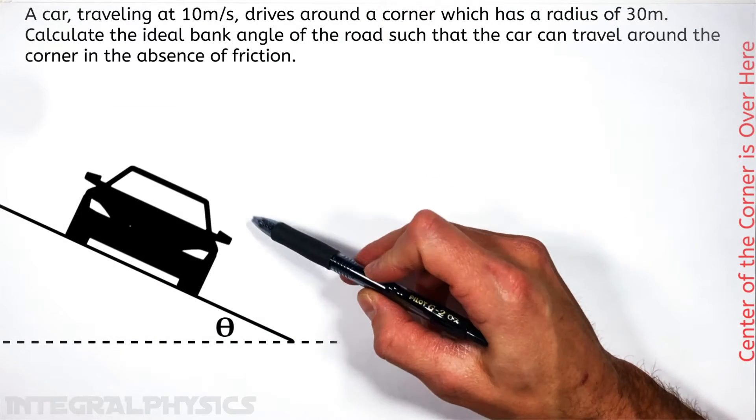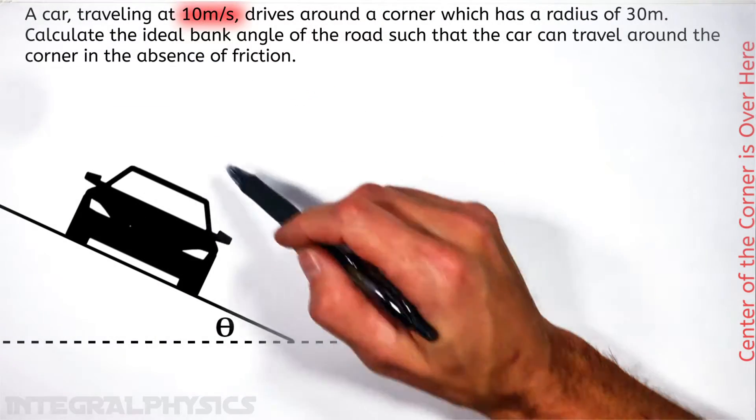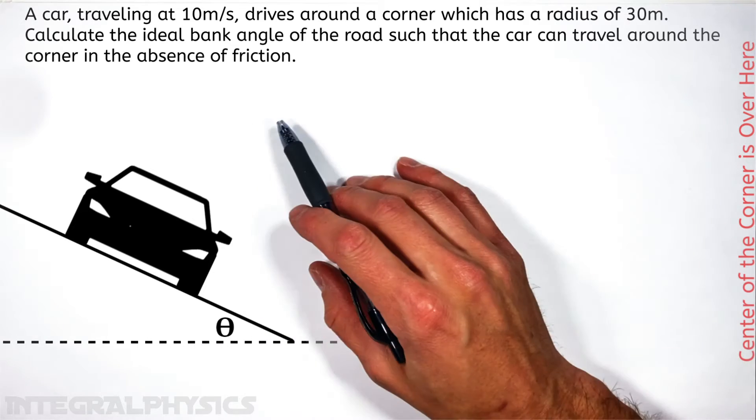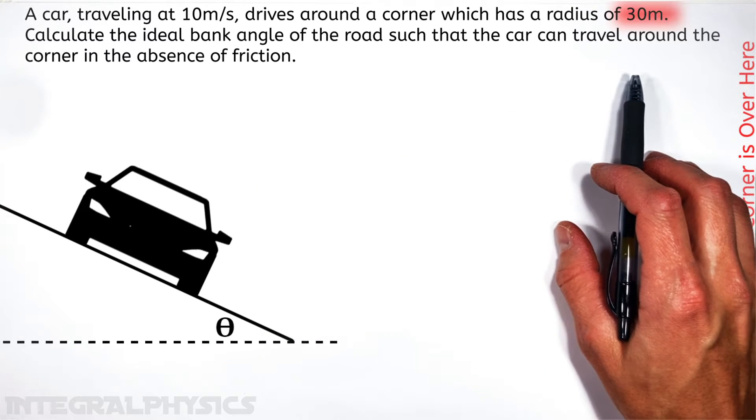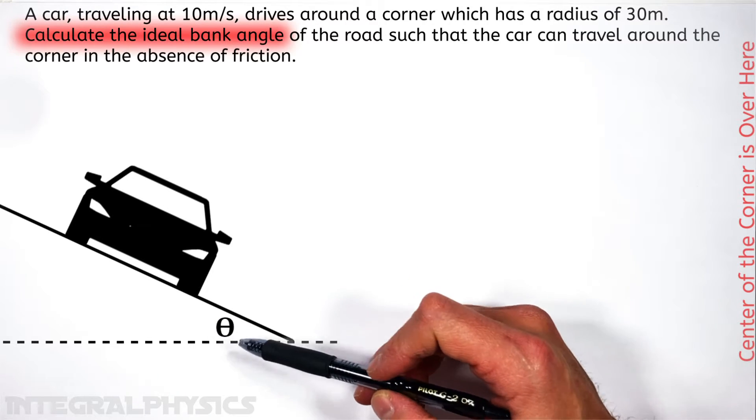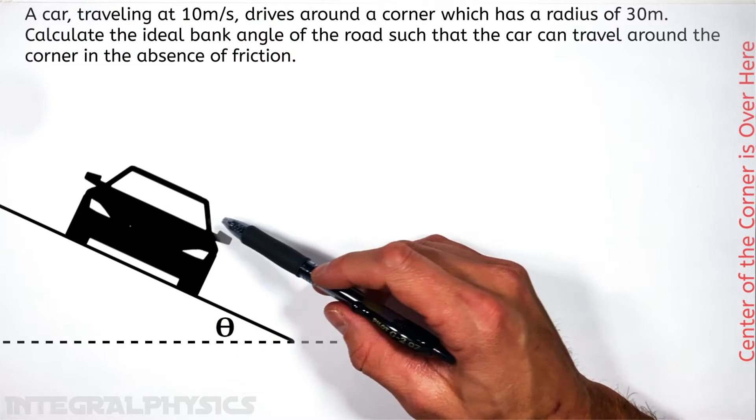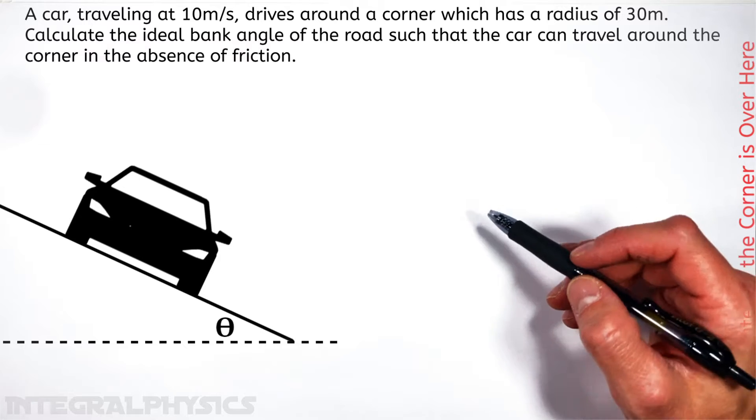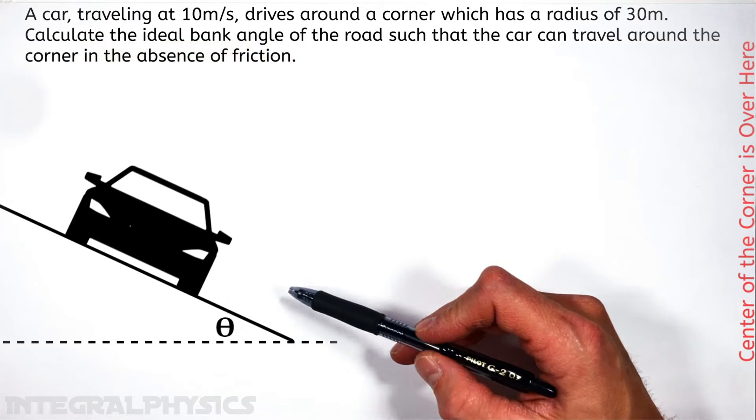All right, today we're taking a look at a car which is going to travel at 10 meters per second around a banked corner that has a radius of 30 meters. And the idea is we want to solve for the ideal bank angle of this road so that the car can travel safely around this corner even in the absence of friction or what you'd think of as traction.